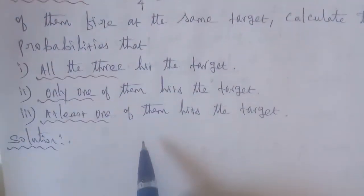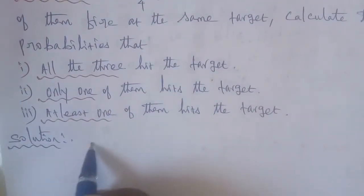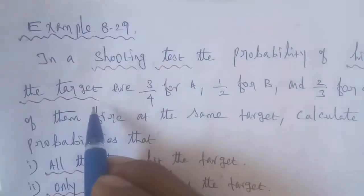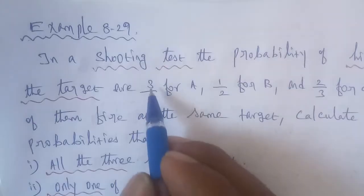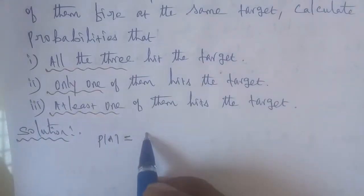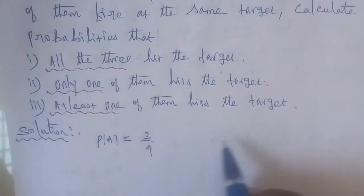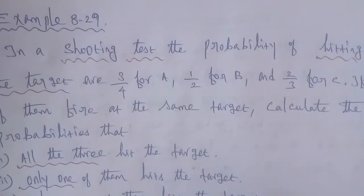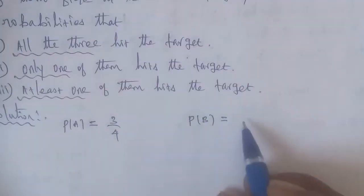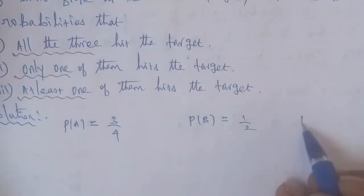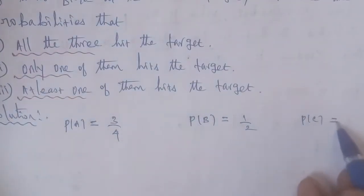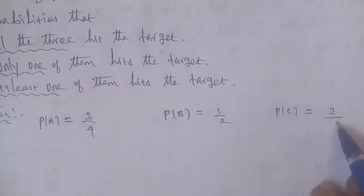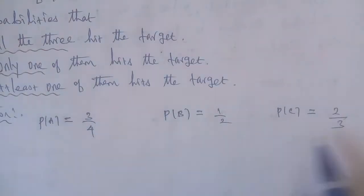The solution: P of A is equal to 3 by 4 — that is the target hit probability for A. P of B is equal to 1 by 2. And P of C is equal to 2 by 3. These are the target hit probabilities for each shooter.